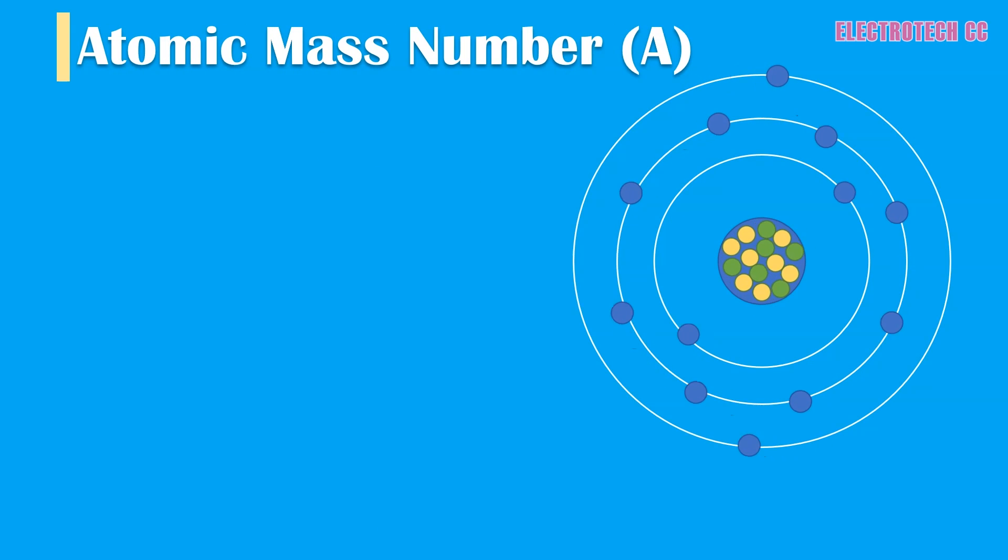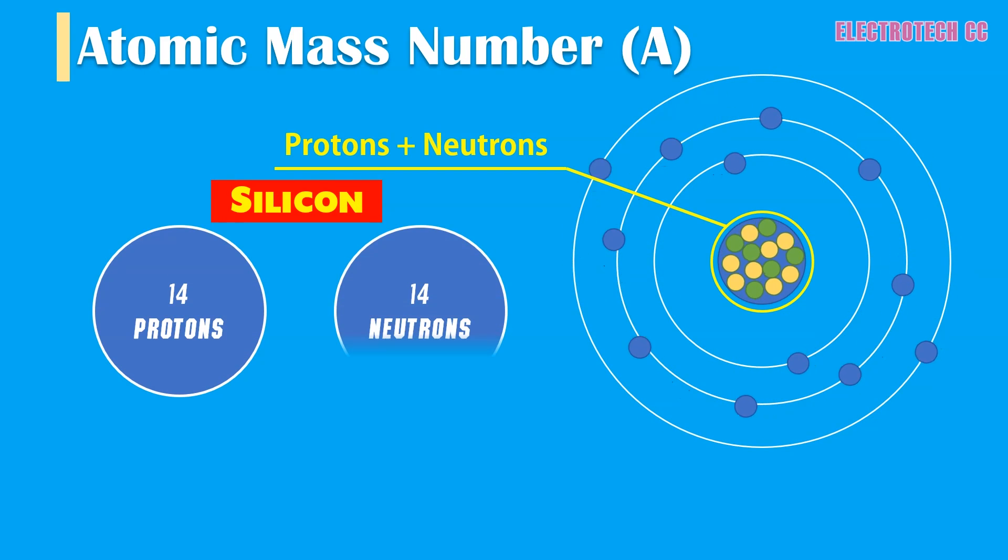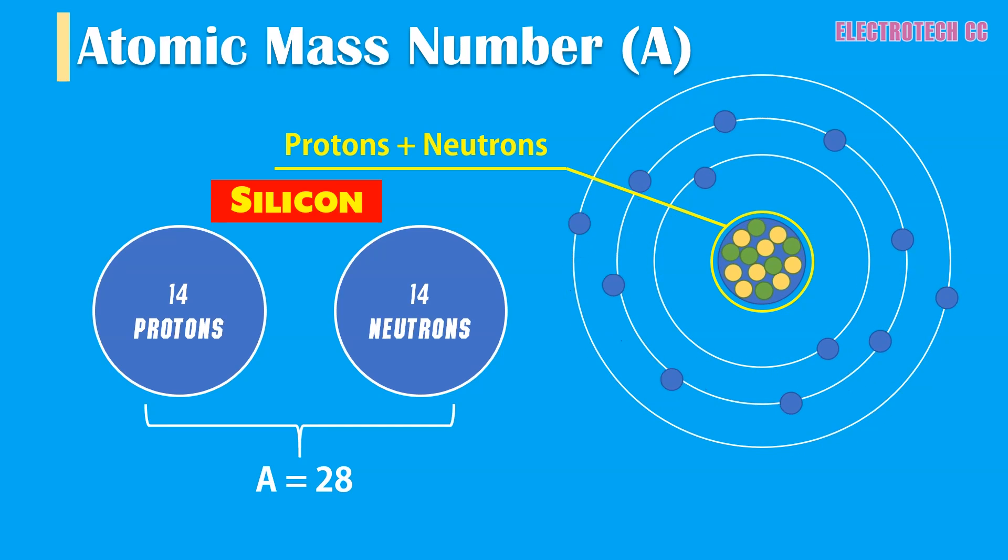Next is atomic mass number, which can be denoted by A. Atomic mass number is the total number of protons and neutrons contained in the nucleus of an atom. For example, silicon has 14 protons and 14 neutrons in its nucleus, hence A equals 14 plus 14 equals 28. Similarly, germanium has 32 protons and 41 neutrons, therefore A equals 73 for germanium.